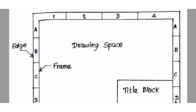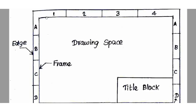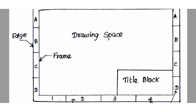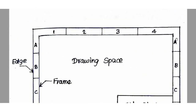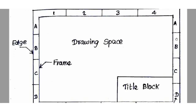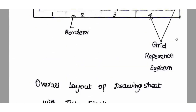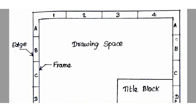This is the layout of the drawing sheet and title block as per SP 46 2003. The sheet has an outer edge, a frame, a drawing space, margins, and a left-side margin for filing purposes. The title block is located in the drawing sheet with dimensions 185 × 65 mm. The grid reference system uses numbers 1, 2, 3, 4 left to right, and letters A, B, C, D top to bottom.